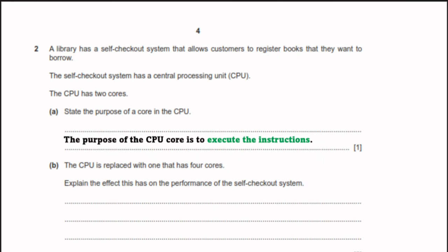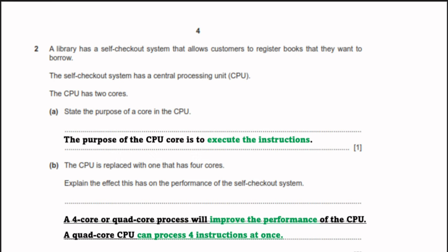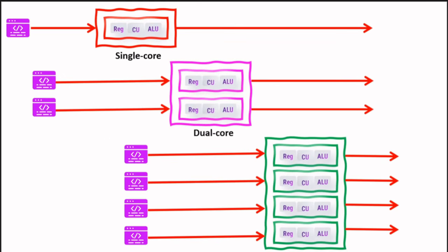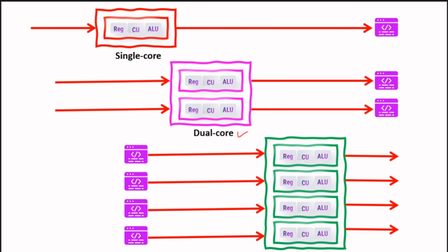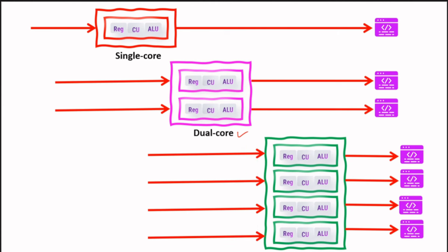Part B: the CPU is replaced with one that has 4 cores. One core can execute one instruction at a time, so 4 cores mean 4 instructions can be executed simultaneously. A quad-core processor will improve the performance of the CPU. Think of each core as a worker — one worker does one job at a time, four workers do four jobs at once. The performance is improved because 4 things are being processed at the same time.